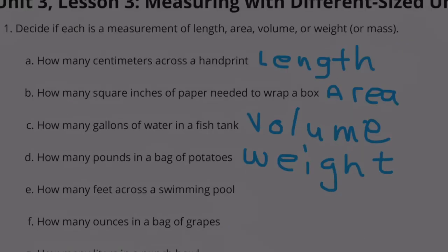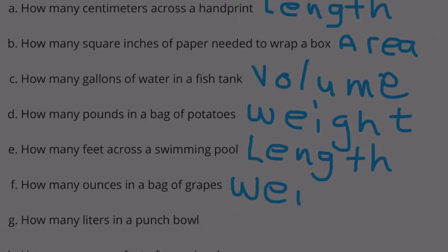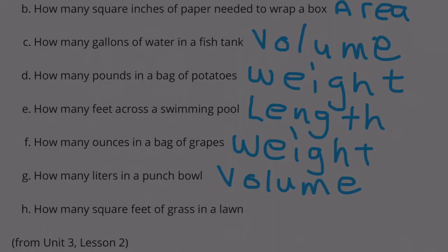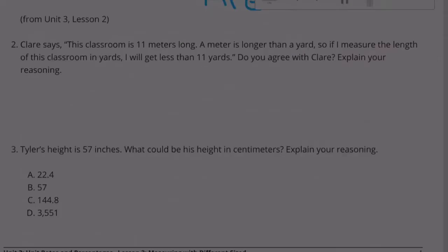Part E: How many feet across a swimming pool? That would be length. Part F: How many ounces in a bag of grapes? That would be weight. Part G: How many liters in a punch bowl? That would be volume. Part H: How many square feet of grass in a lawn? That would be area.